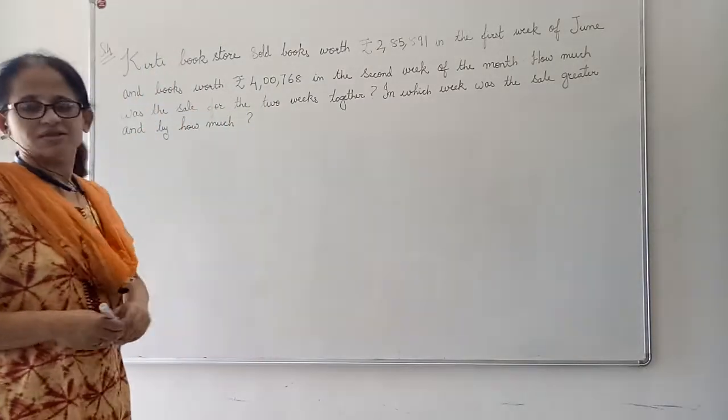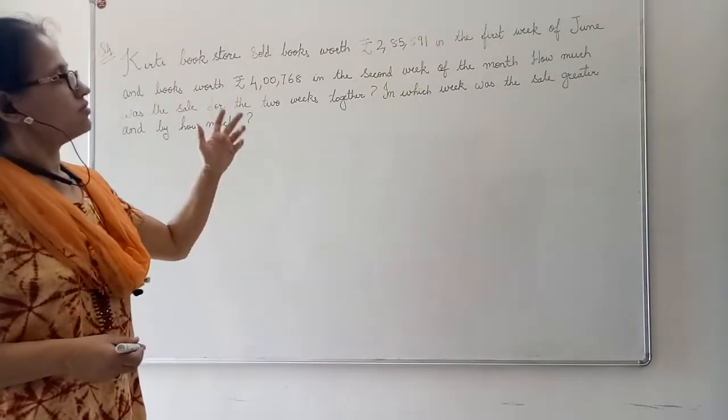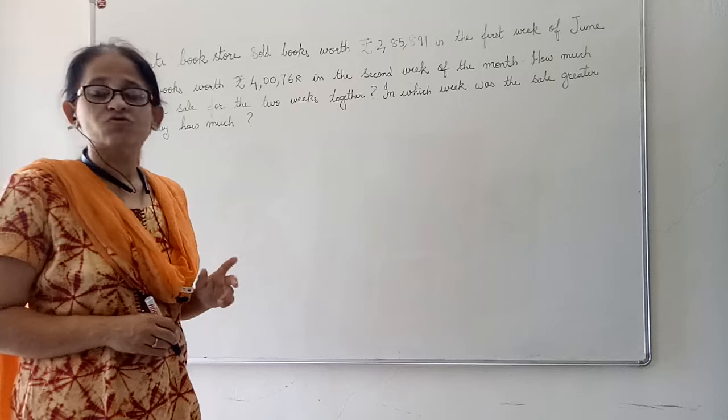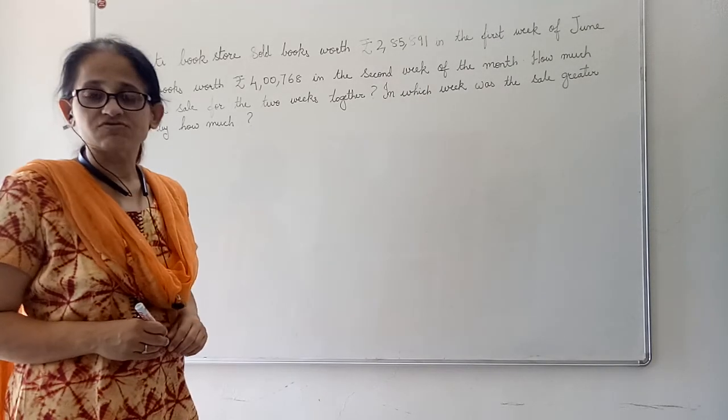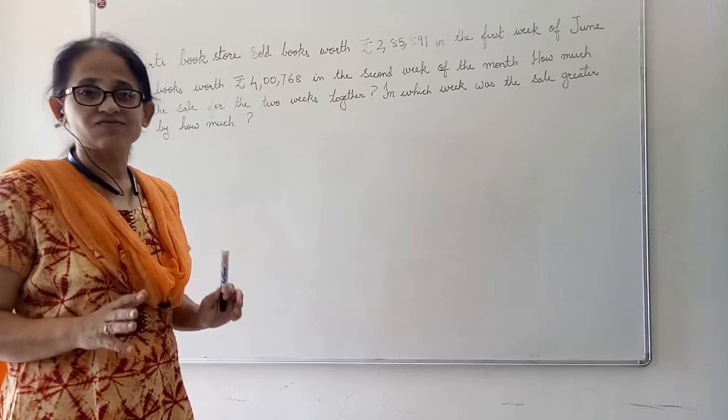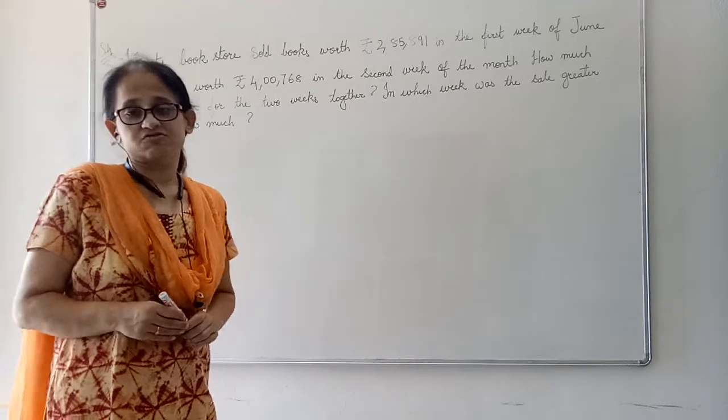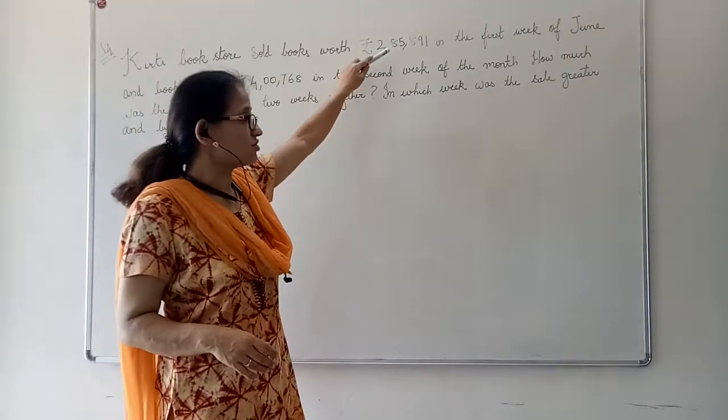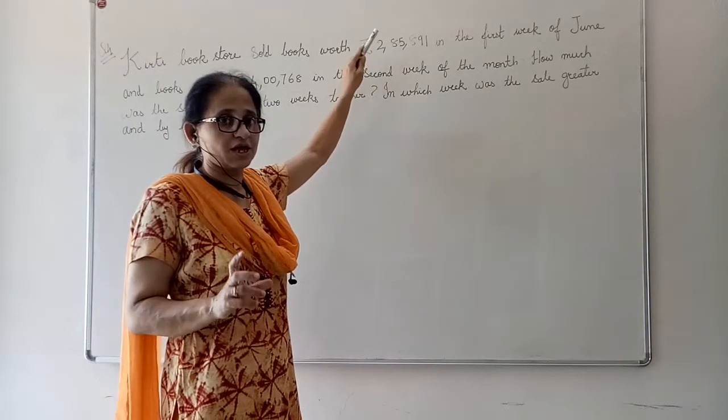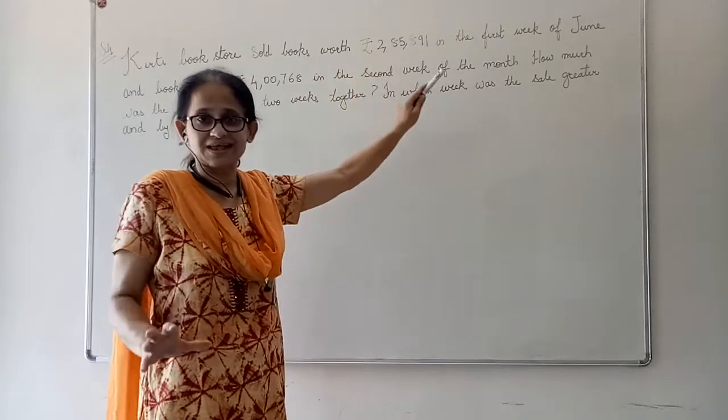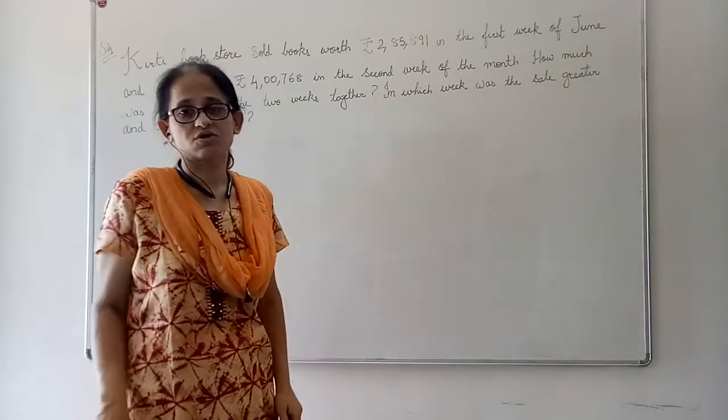This is one Kirti bookstore who sold books worth rupees 2,85,891 in the first week of June. Now these are not the books, this is the cost of the books. They got this much money by selling books in the first week of June.